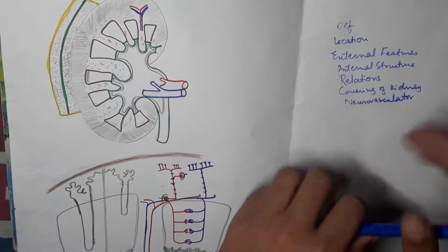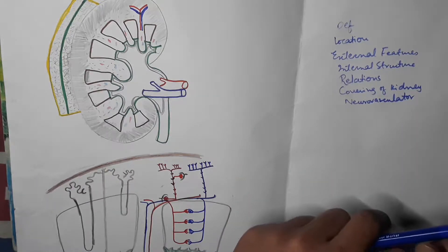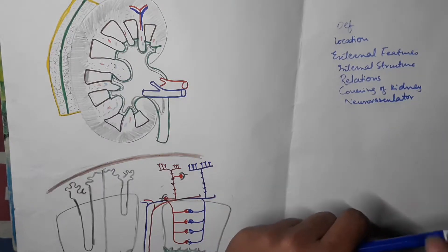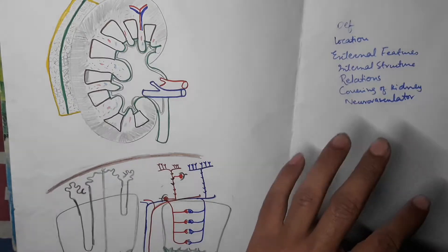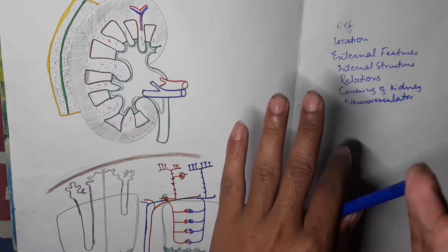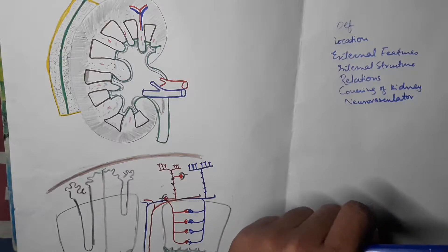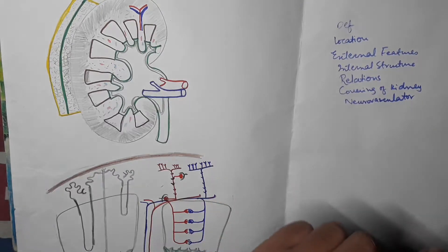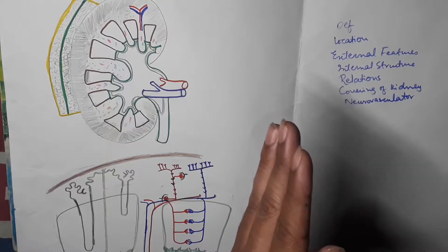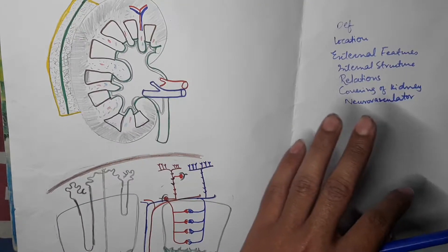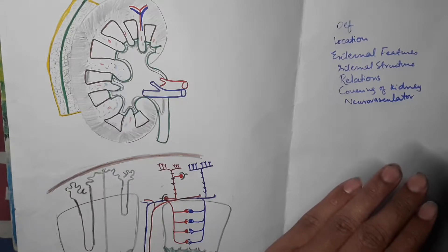Now we come to the location of the kidney. Both kidneys are situated in the epigastric region and partly in the hypochondrium — the left kidney in the left hypochondrium and the right kidney in the right hypochondrium — then in the lumbar regions, and also the flank region. Both kidneys extend from the upper border of T12 to the center of the body of L3 lumbar vertebra. The right kidney is slightly lower than the left kidney due to the presence of the large right lobe of the liver. The left kidney is slightly nearer to the median plane than the right kidney.